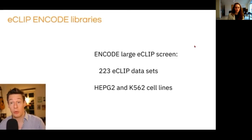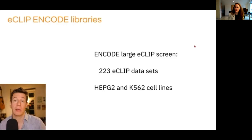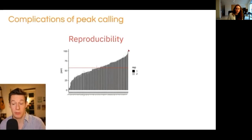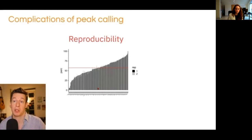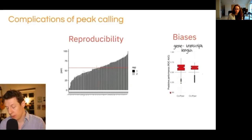The biggest eCLIP screen was done by ENCODE a couple of years ago. They have over 200 datasets — a fantastic and quite expensive effort across two cell lines — and they have done peak-calling and detected binding sites. We found that the peak-caller is sometimes really reproducible within replicates, but sometimes hardly reproducible at all: about 56% of found peaks are actually reproducible in the other replicate. Also there are biases — longer transcripts have more peaks. So we were in need of an improved method.